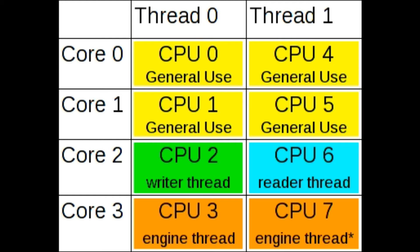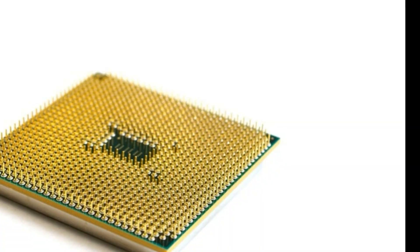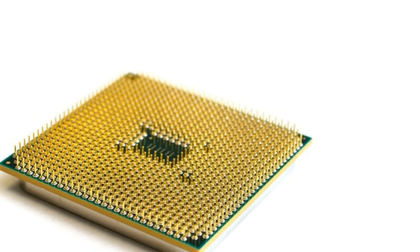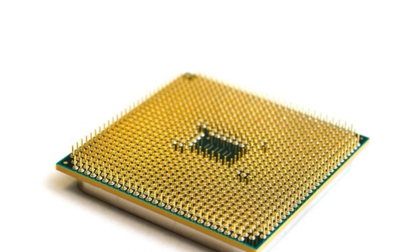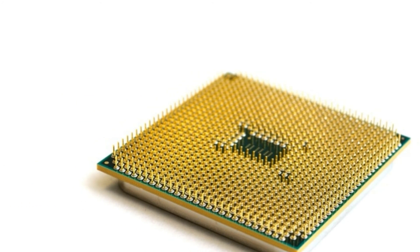Hyper threading is also not supported by all operating systems — they are said to not be optimized for hyper threading. Also, hyper threading is not energy efficient and uses a lot of power, so low-power CPUs cannot support hyper threading.